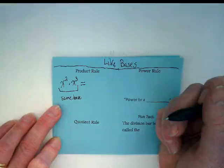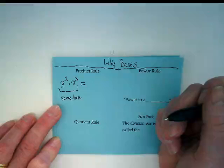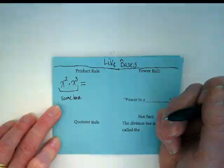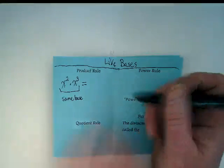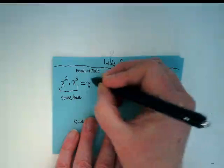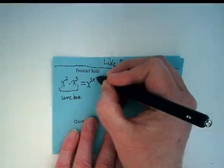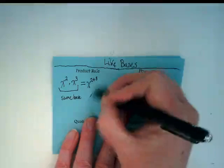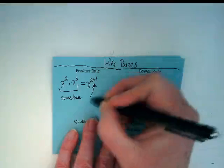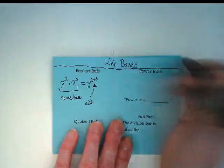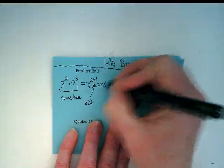Think back to our Desmos activity. If I am multiplying x squared times x to the third, what is going to happen to my exponents? I am going to do x to the 2 plus 3. I want you to point an arrow and show that we add with the Product Rule and that equals x to the fifth.